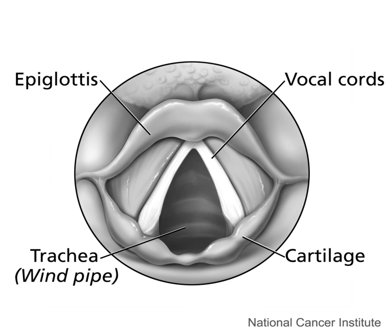Bilabial consonants are made with both lips. In producing these sounds the lower lip moves farthest to meet the upper lip, which also moves down slightly, though in some cases the force from air moving through the aperture may cause the lips to separate faster than they can come together. Unlike most other articulations, both articulators are made from soft tissue, and so bilabial stops are more likely to be produced with incomplete closures than articulations involving hard surfaces like the teeth or palate.